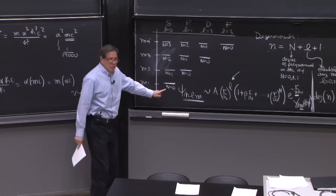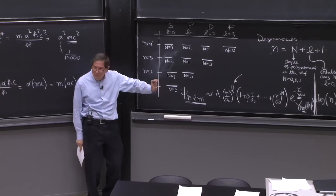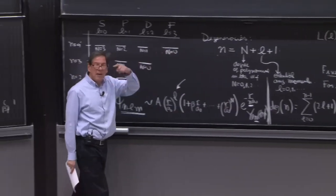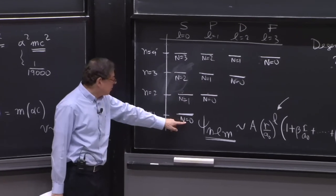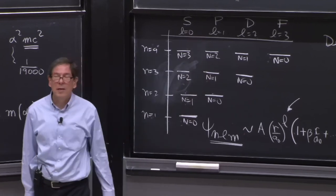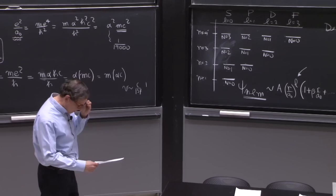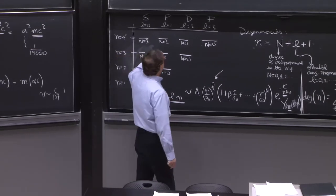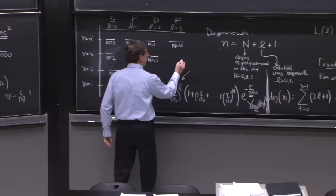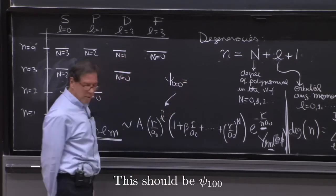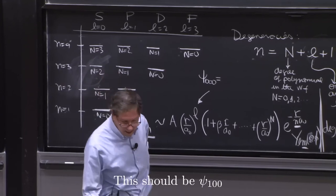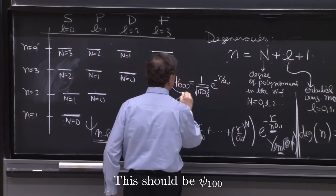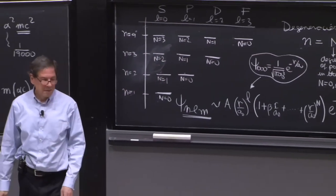Interestingly, the quantum number N, capital N, tells you the number of nodes of the wave function. Because a polynomial of degree N can have N zeros. Therefore, this wave function has no nodes. One node, two nodes, three nodes. The number of nodes increase. The ground state wave function is 1 over √(π a₀³) e^(-r/a₀). That's the ground state wave function.